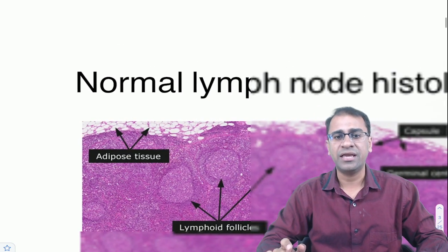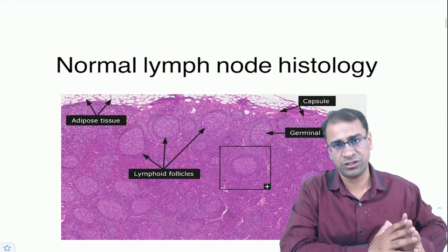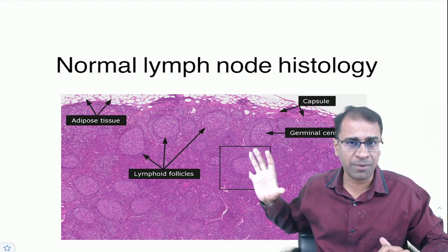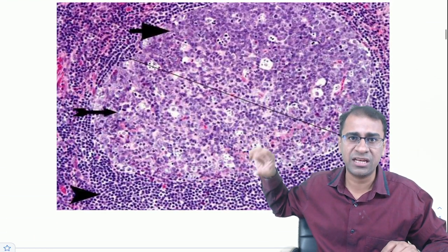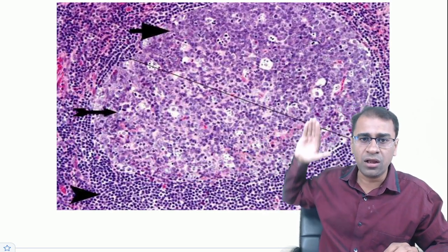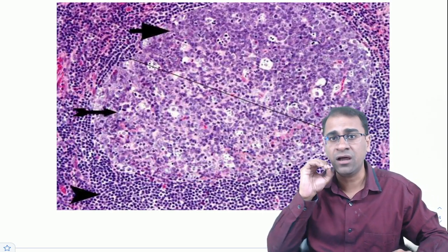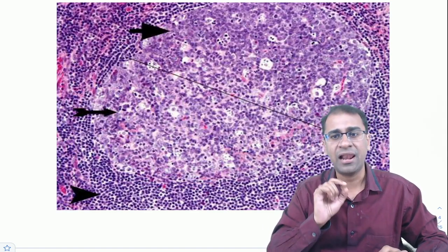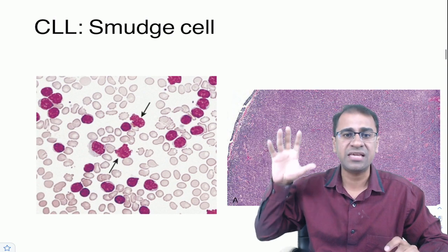Here is normal lymphoid histology. Keep this in mind — in a magnified view you should recognize the dark zone, light zone, and mantle zone as the normal lymph node architecture. Use this as a baseline when comparing to abnormal biopsy findings.